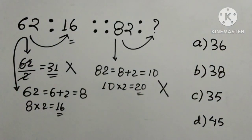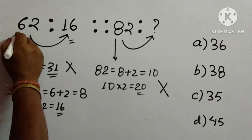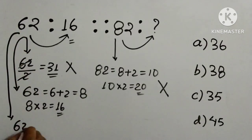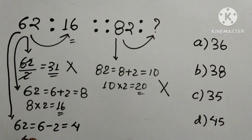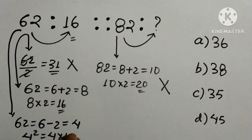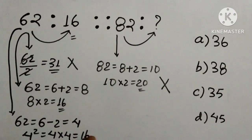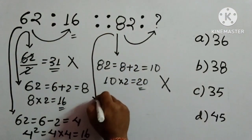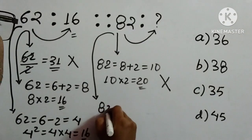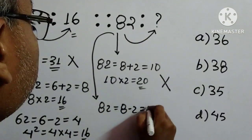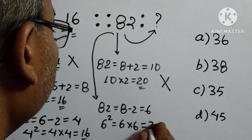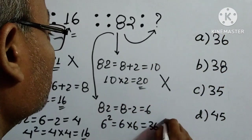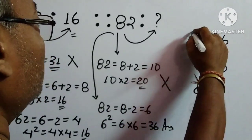We have to try a different method. Again we consider 62 and subtract the digits: 6 minus 2 is 4. We then square 4: 4 into 4 is 16, which is given. Now we apply the same process to 82: 8 minus 2 is 6, and 6 squared is 6 into 6, which equals 36. And 36 is given in the options — so 36 is the answer, option A.